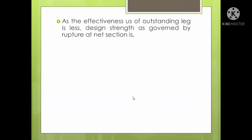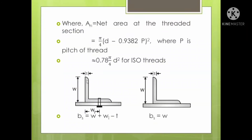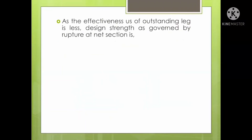The effectiveness of the outstanding leg is less because it is not connected to the gusset plate. In both diagram cases, the vertical part — either this leg or that leg — has reduced effectiveness as it is not connected to the gusset plate. This is the design strength as governed by rupture at the net section.